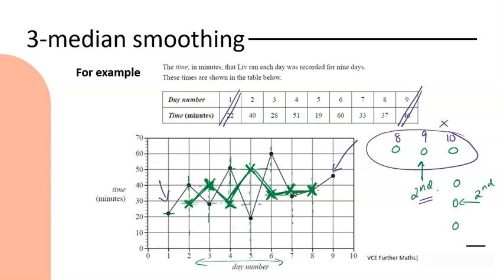Once I have done the smoothing I join my marks to create a time series graph underneath. Generally speaking, they may then ask you to comment on the effectiveness of the smoothing - what you would like to see is that it has actually taken out those fluctuations from the original data. I would say that from day six through to eight it's been effective, but the first part of the data this method has not been very effective for this particular data set. So what we're going to try now is five-median smoothing.